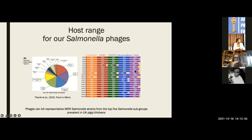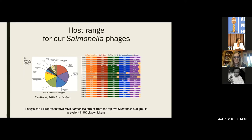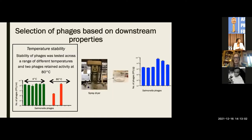These are the five largest slices of the pie, and the phages we've isolated to target salmonella are remarkable — I've never had such a good phage set in terms of coverage. We have a set of phages that target nearly all of the strains within the major types of salmonella. This allowed us to then select phages not just on their host range, but also on their downstream properties.